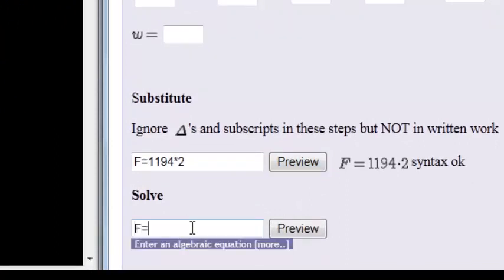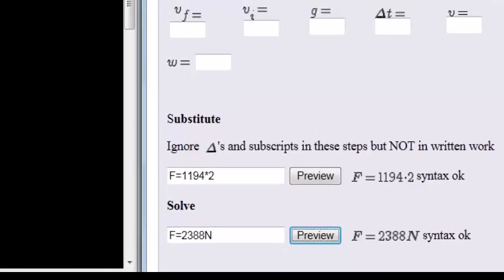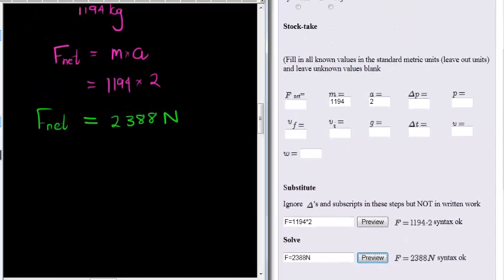F is equal to, when I double 1194 I get 2388. Don't forget your units: newtons. And actually what we should do is write the direction, because remember force is a vector in the direction of acceleration.